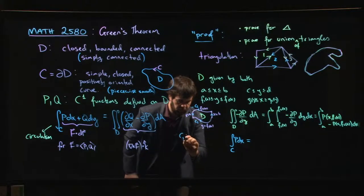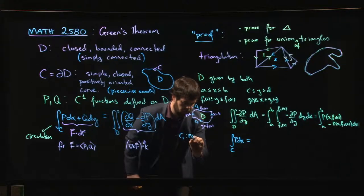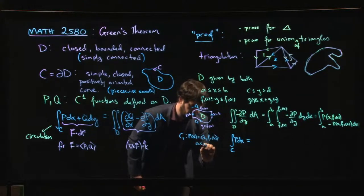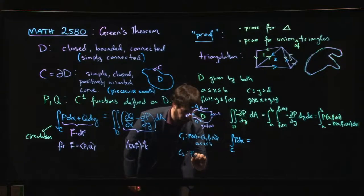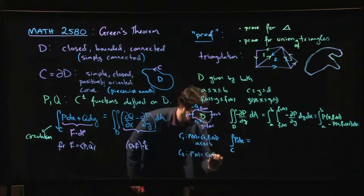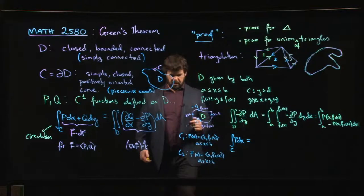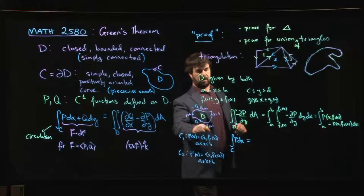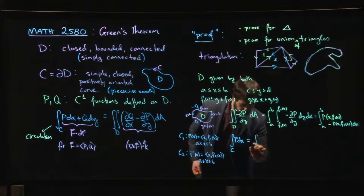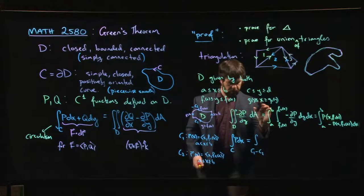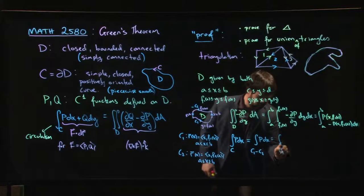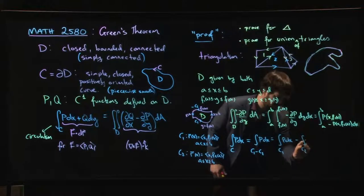We'd want C1, we would take r of x to be (x, f1 of x) with x between a and b. And C2, the natural thing to do would be to take r of x equals (x, f2 of x) with x going from a to b, right? But with this parametrization for the top, you'd be going left to right, not right to left as you need, right? So you'd be doing the integral over C1 minus C2 p dx, right? So that's the integral over C1 minus the integral over C2.